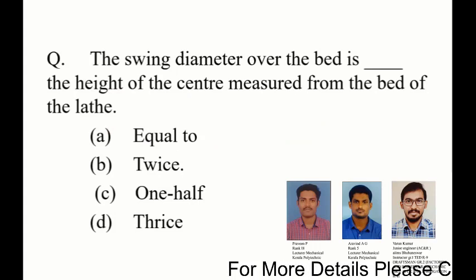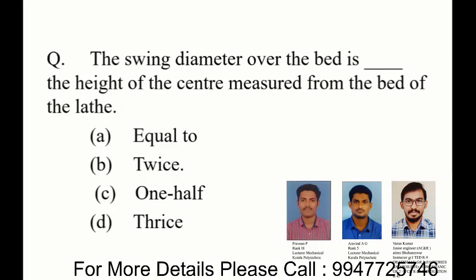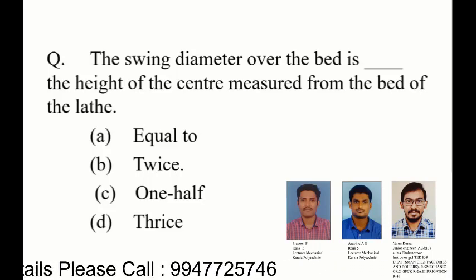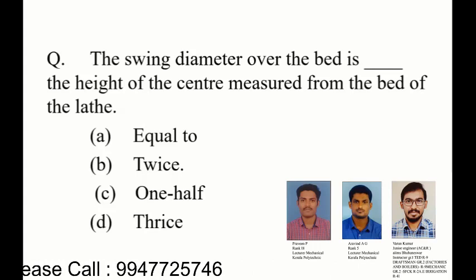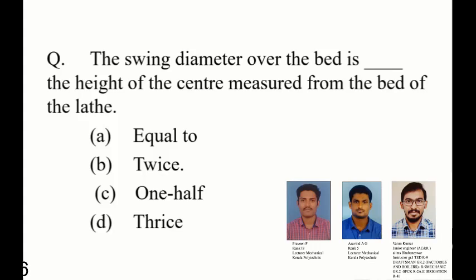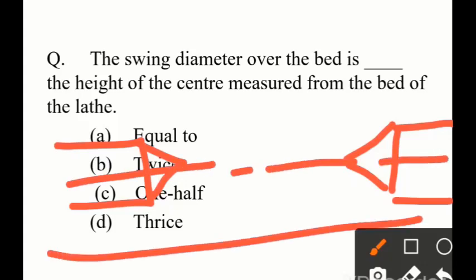Question 4: Swing diameter over the bed is dash the height of the center measured from the bed of the lathe. The options are: equal to, twice, one-half, and thrice the height of the center.